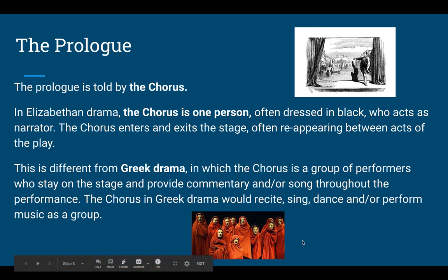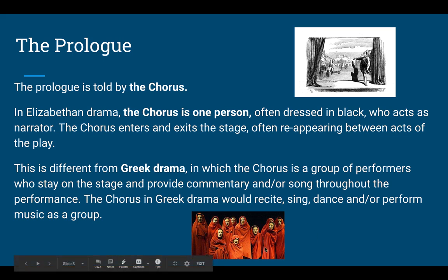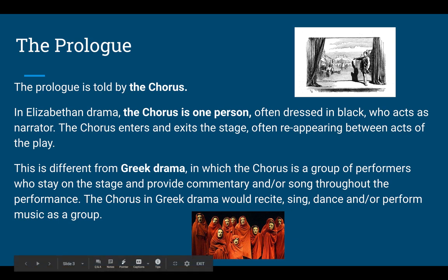So the chorus in Elizabethan drama is just one person — think of it as the narrator — whereas the chorus in Greek drama is a group. This is where we get our modern ideas about the chorus from Greek drama: a group of people often singing, dancing, etc., and they're on the stage the whole time. So you can imagine one person coming out and explaining the set and the conflicts in Romeo and Juliet.